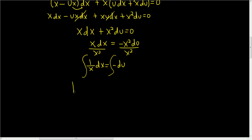And so we end up with the natural log of the absolute value of x equals negative u plus a constant which we'll call c. Keep in mind that y is equal to ux, and that means that u is equal to y over x.